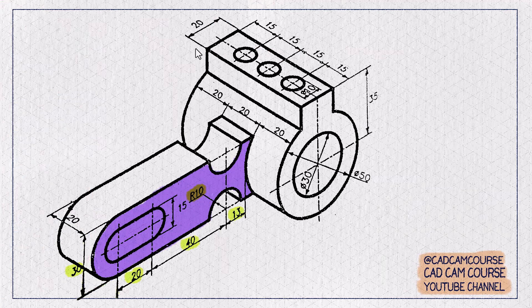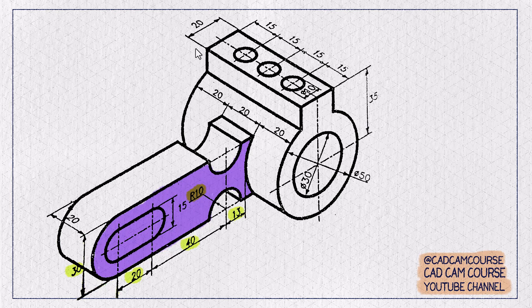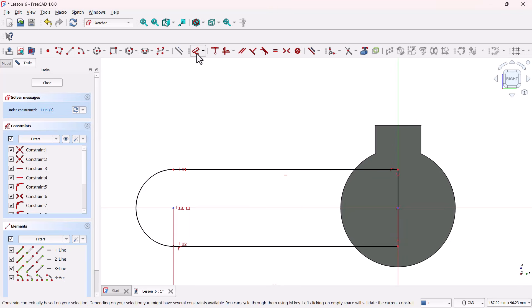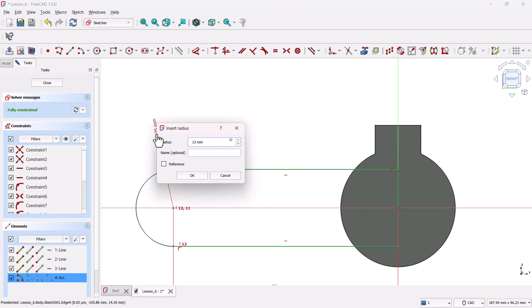Now, add the diameter of this arc. The diameter needs to be 30 millimeters, which means the radius is half 15 millimeters. So select the dimension tool and add radius as 15 millimeters.